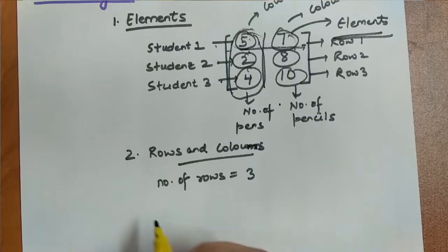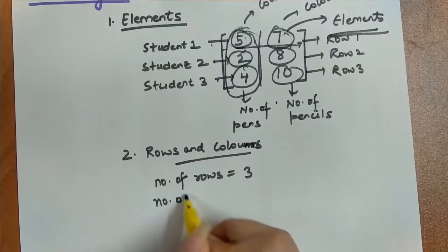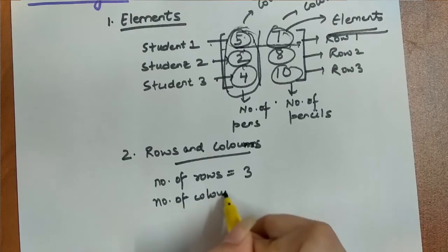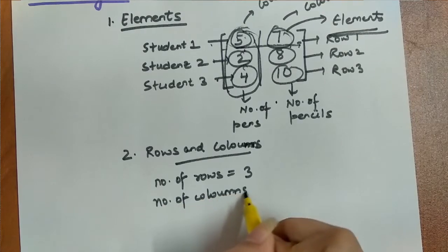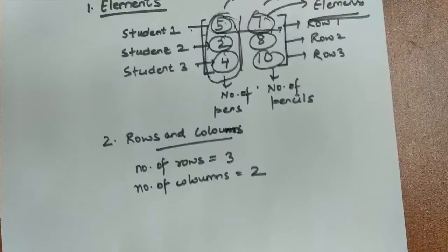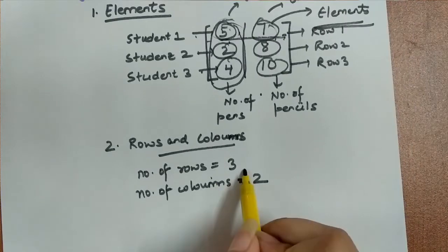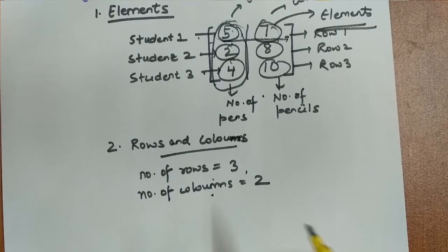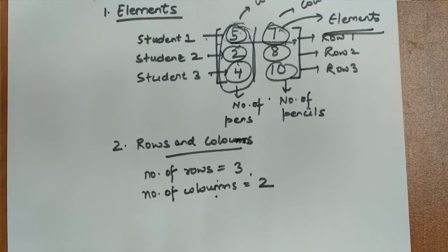So the number of rows is 3, representing student 1, student 2, and student 3 data. The number of columns is 2, representing how many pens and how many pencils.